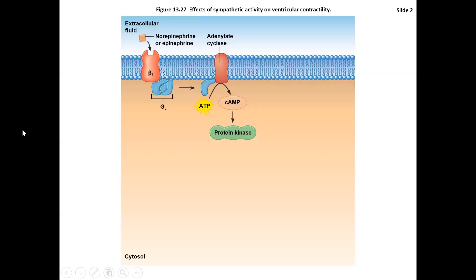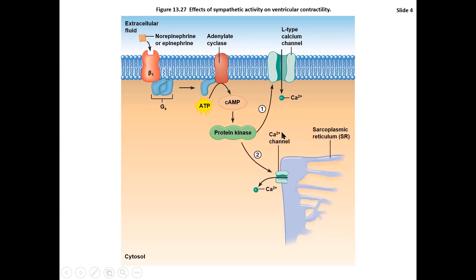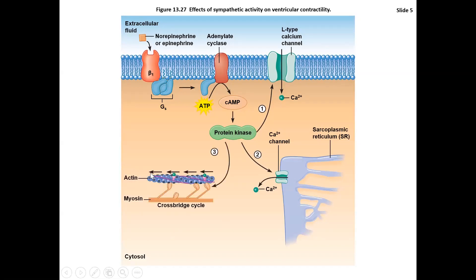Here is a schematic showing that process. Beta-1 receptors are coupled to a G-stimulatory protein, generating our second messenger. Protein kinase influences the L-type calcium channels inserted into the membrane, keeping them open for longer durations so more calcium enters the cell. Second, calcium channels on the sarcoplasmic reticulum are also opened for longer periods, so more calcium moves from the SR into the cytosol. Third, there is a faster rate of myosin ATPase activity, producing a faster cross-bridge cycle rate, which influences contractility.